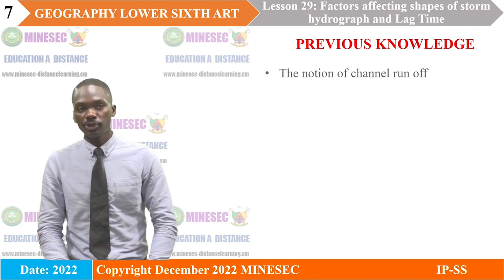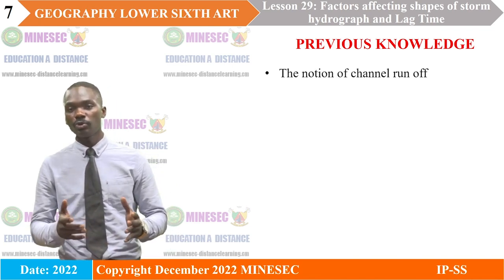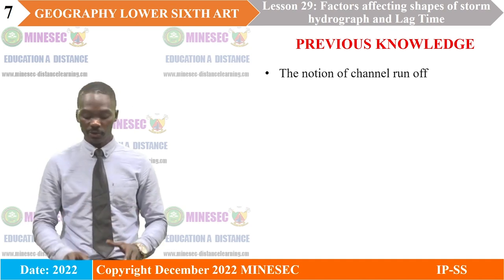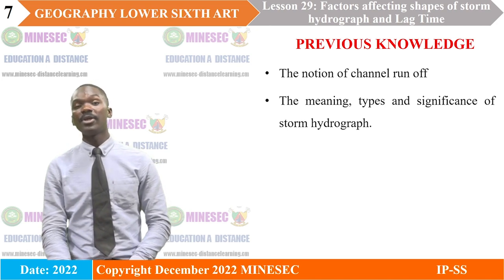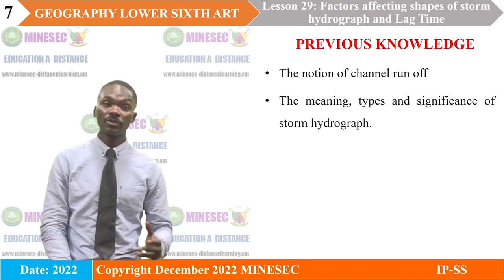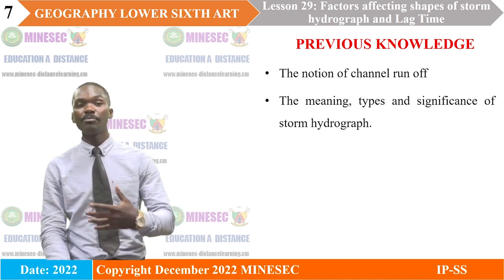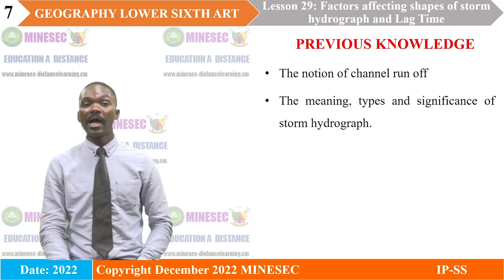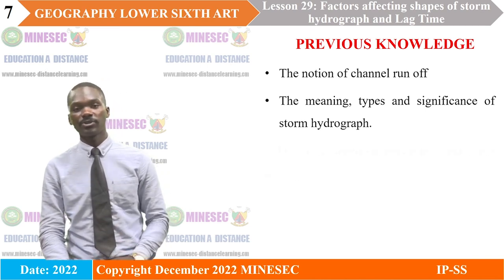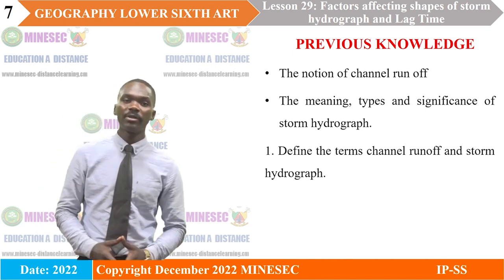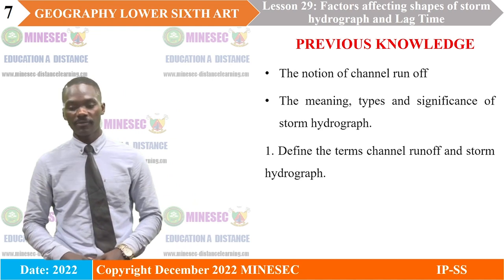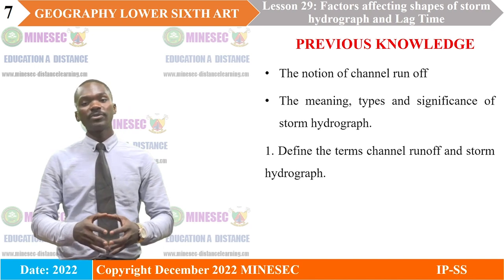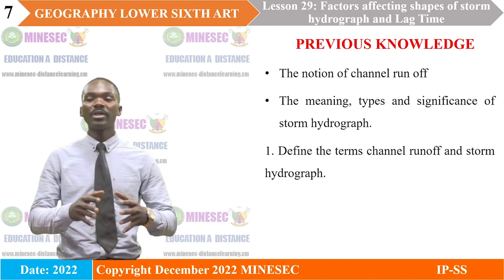Our previous knowledge: we have knowledge on notions of channel runoff — that is the various streams that run off into a main discharge — the meaning, types and significance of a storm hydrograph. We saw the meaning of the storm hydrograph, the three main types, and its significance or importance. So let us define the channel runoff and the storm hydrograph. The channel runoff, as we simply said, is the various streams that run off after the water has fallen, that is, after rainfall.